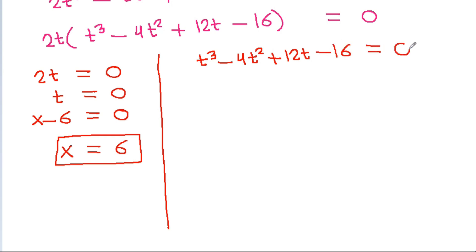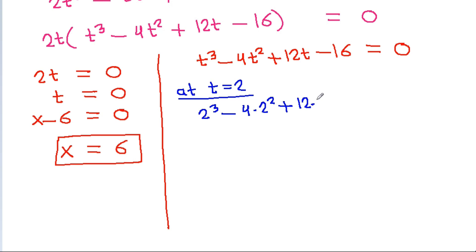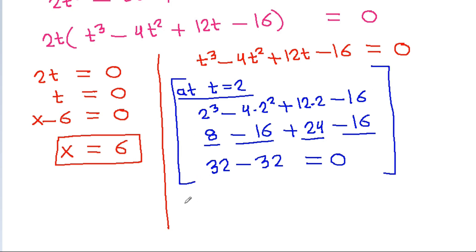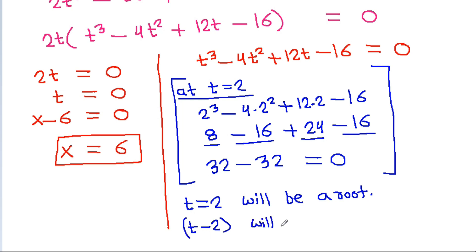Or t³ - 4t² + 20t - 16 = 0. We check t = 2: 8 - 16 + 40 - 16 = ... testing gives 8 - 16 + 24 - 16 = 0, which confirms t = 2 is a root, so (t - 2) is a factor.